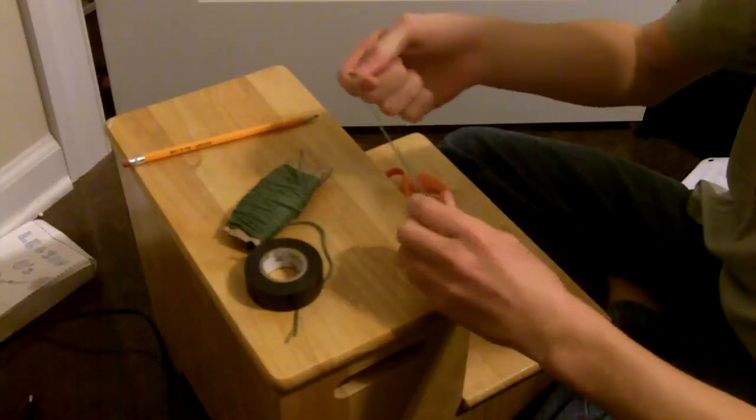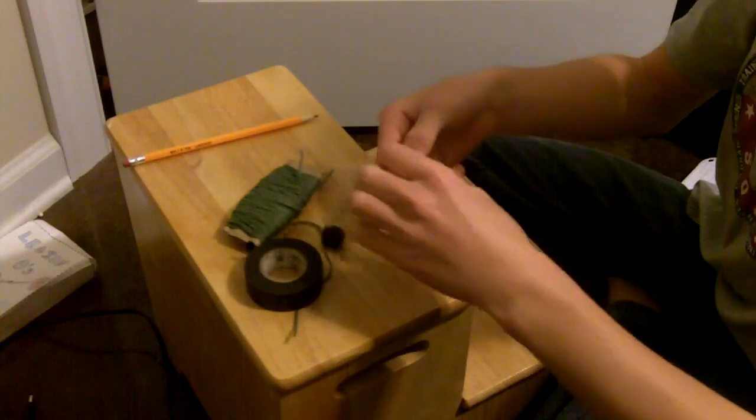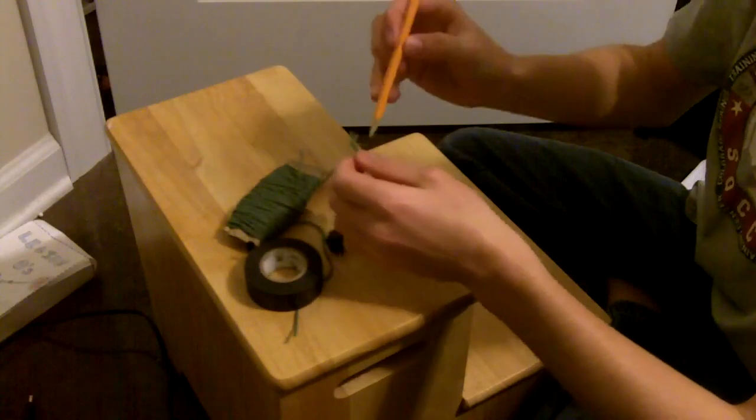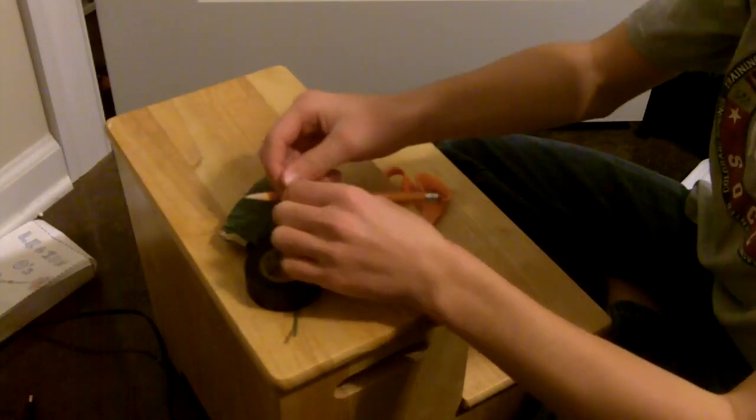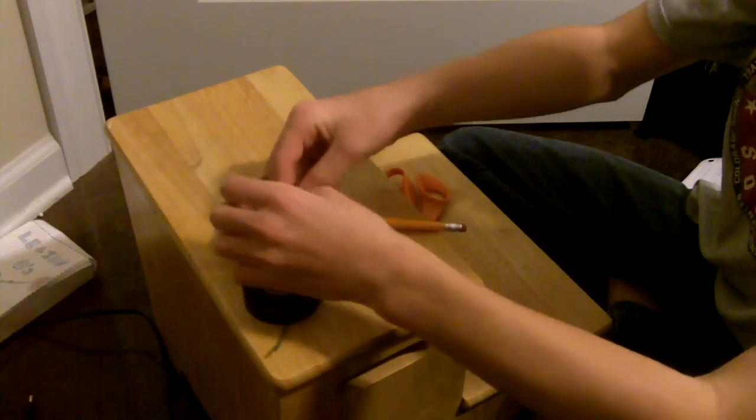And then once you have it all nice and packed, then you're going to make a small loop on the end. Just once. First. And then you just slide it onto your pencil, tighten it, and then you can do one more knot so it doesn't come off when you're hitting people.